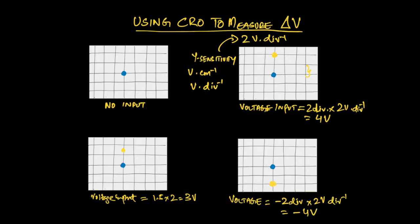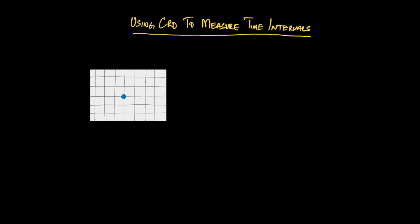Another application we have with CROs is measuring time intervals. In order to measure time intervals we have to apply a time-based voltage across the X input. I'll write that down for you so it's easy to remember: time-based voltage across the X direction or the X input.